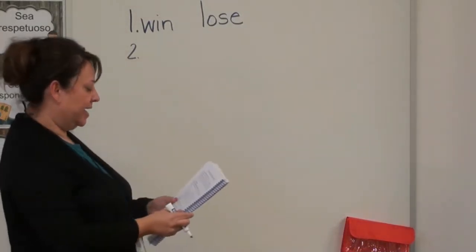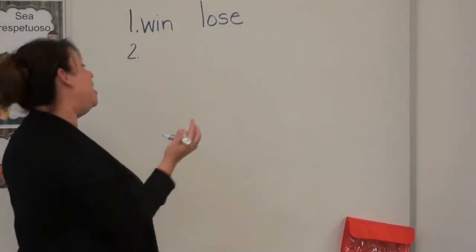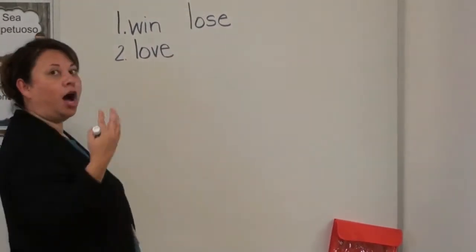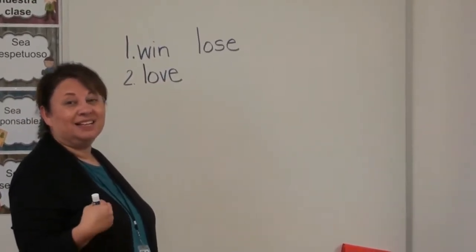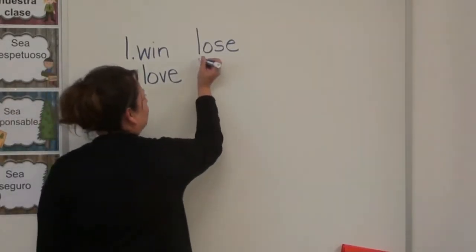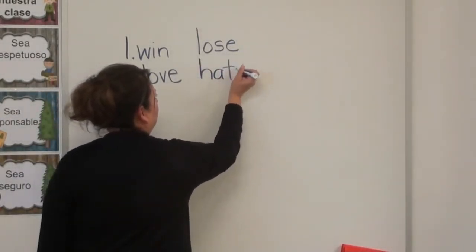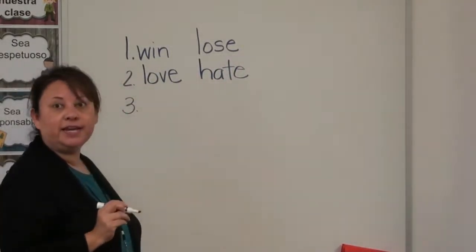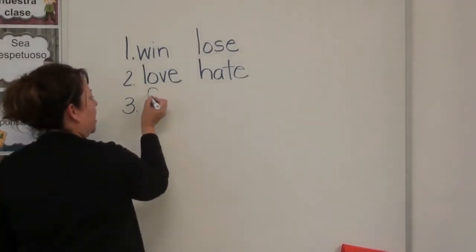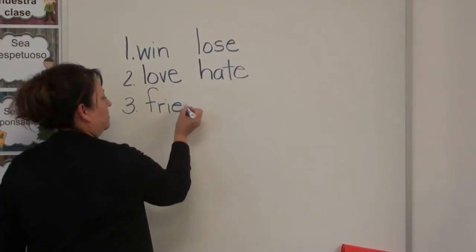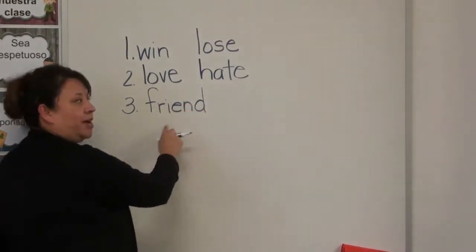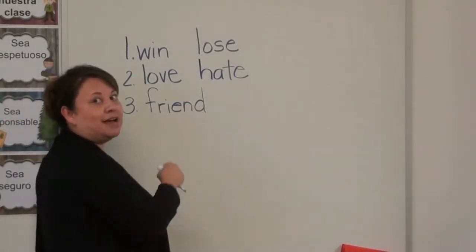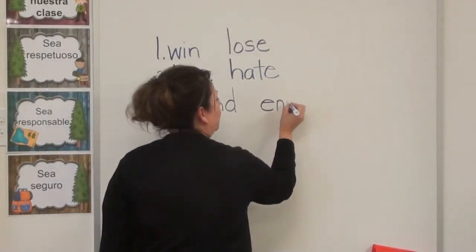If we said that maybe I love a certain sport — 'love' — the opposite would be, maybe somebody else doesn't love it and they 'hate' that sport. Love and hate. If I said the word 'friend,' maybe I have a friend on my team, but the opposite, the antonym, would be — if that person's not my friend, then they are my 'enemy.'